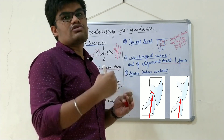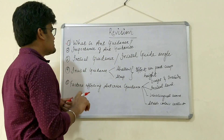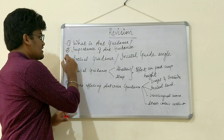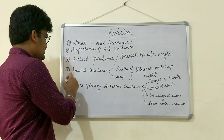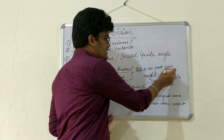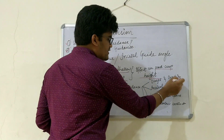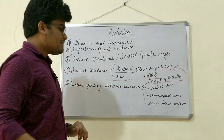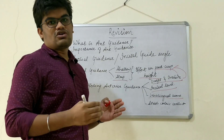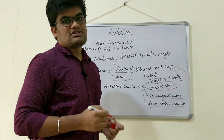In revision: we covered what anterior guidance is and its importance with respect to the TMJ, dentition, and prosthesis. Then we discussed incisal guidance and the incisal guide angle, and how shallow versus steep incisal guide angles affect posterior cusp height. Finally, we covered factors affecting anterior guidance: overjet and overbite linked to posterior cusp height, incisal level at the same occlusal plane, labio-lingual curve alignment, and stable centric contact.